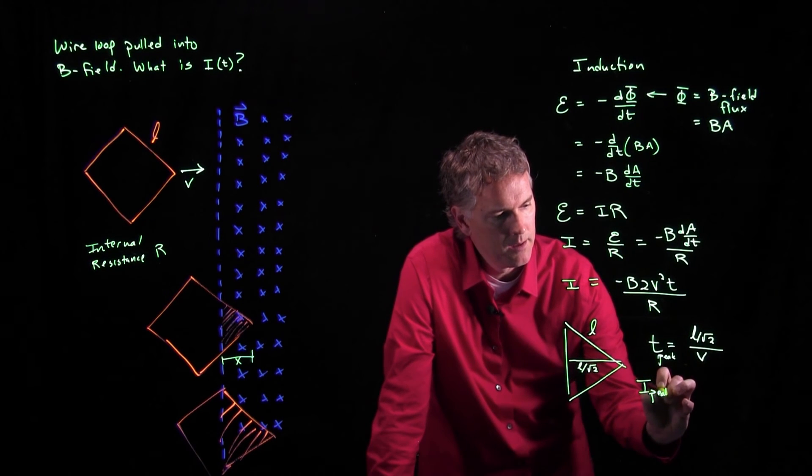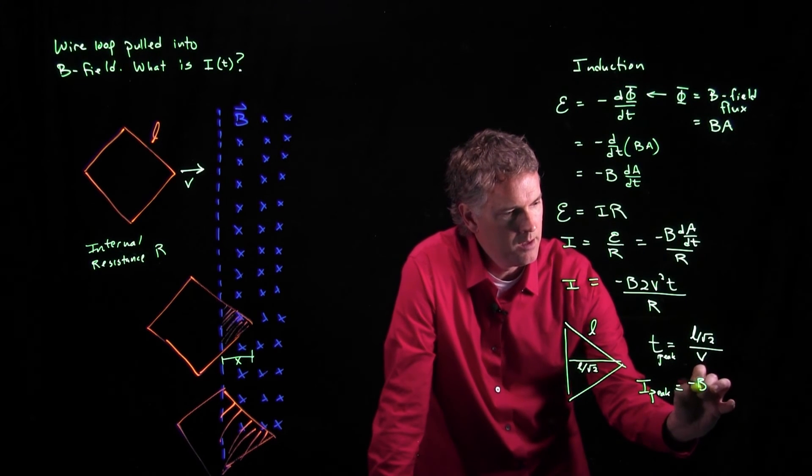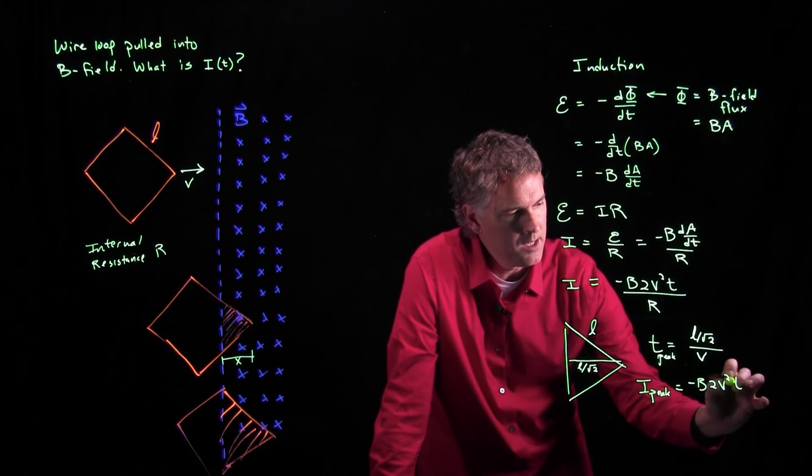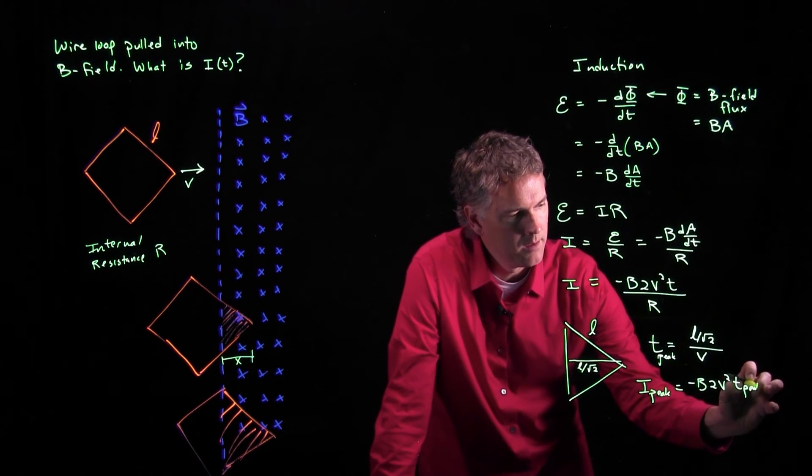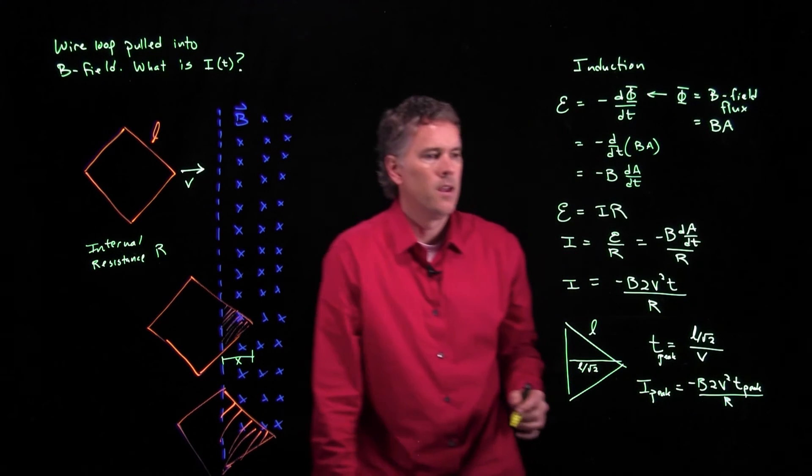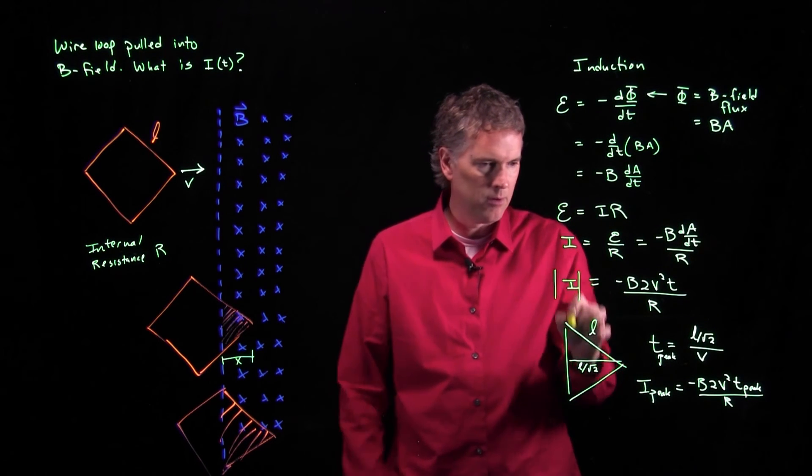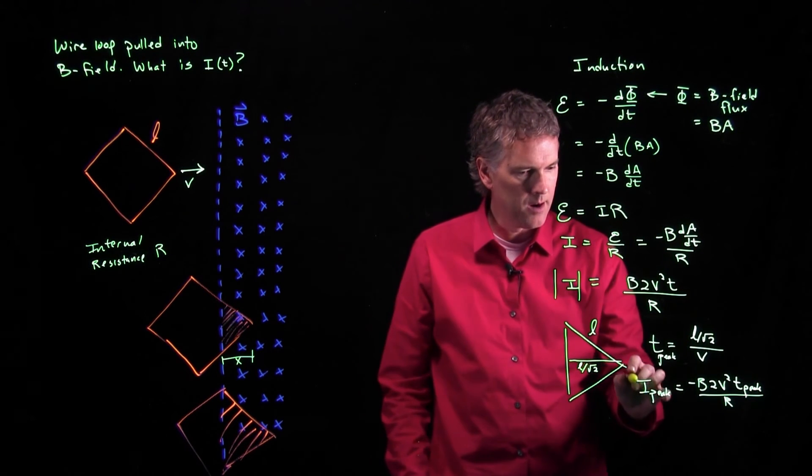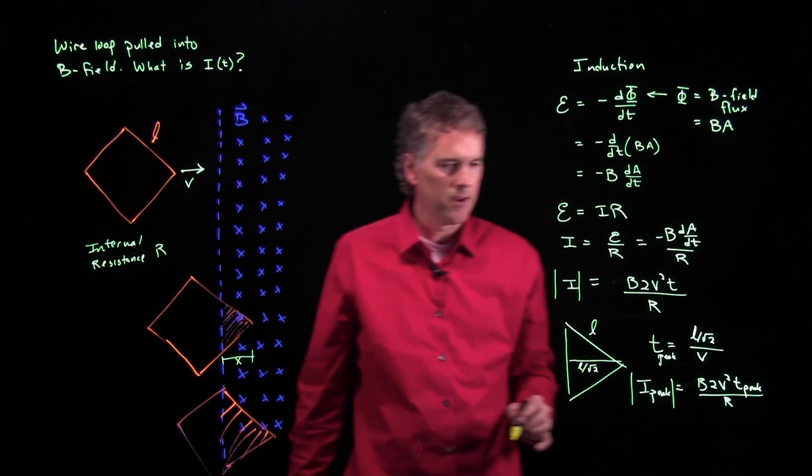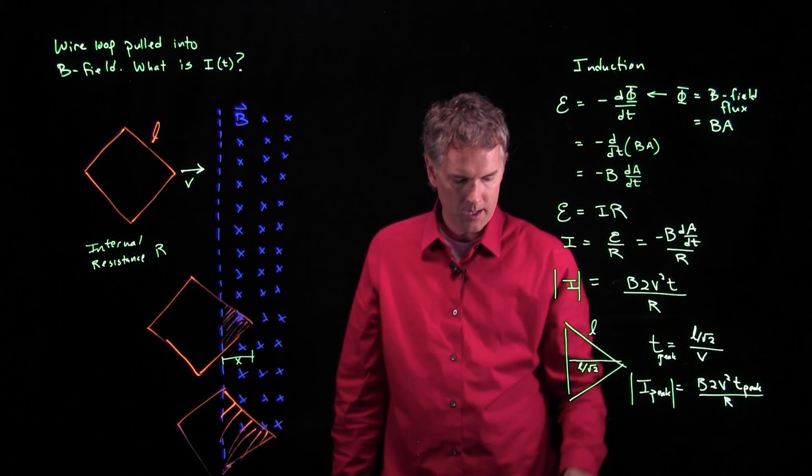I peak is going to be this thing, negative B times 2 times v squared times T peak, all over R. And let's not worry about the sign. So we're just going to say the magnitude of I, and then I'm going to take off this negative sign right there. And we'll say the magnitude there, and we'll take off that negative sign right there. This is how you calculate what the peak current is. And now you can plot this thing out as a function of time.